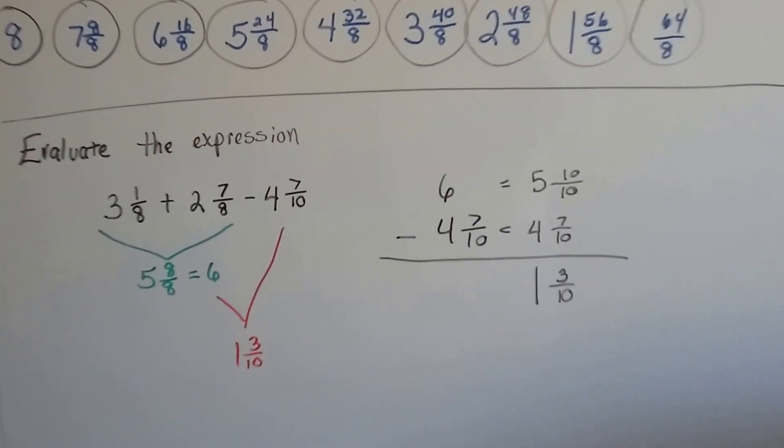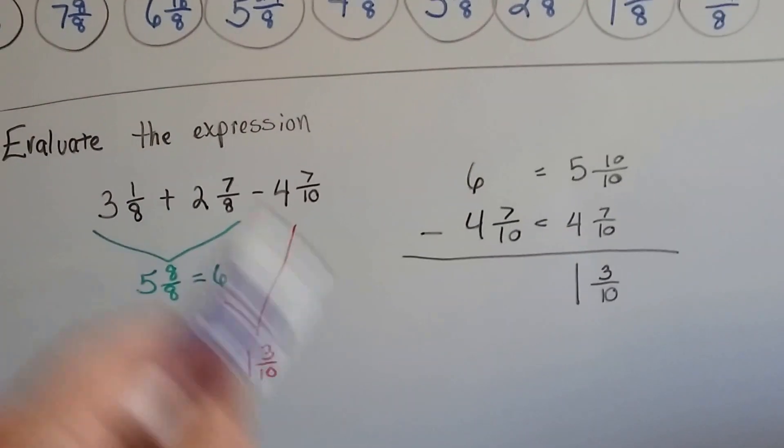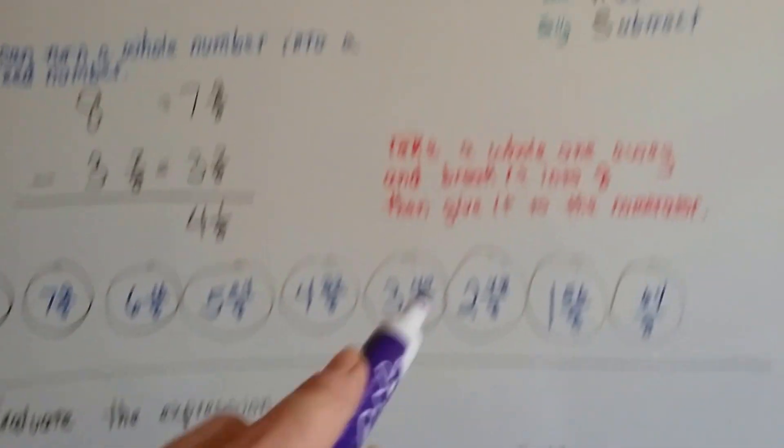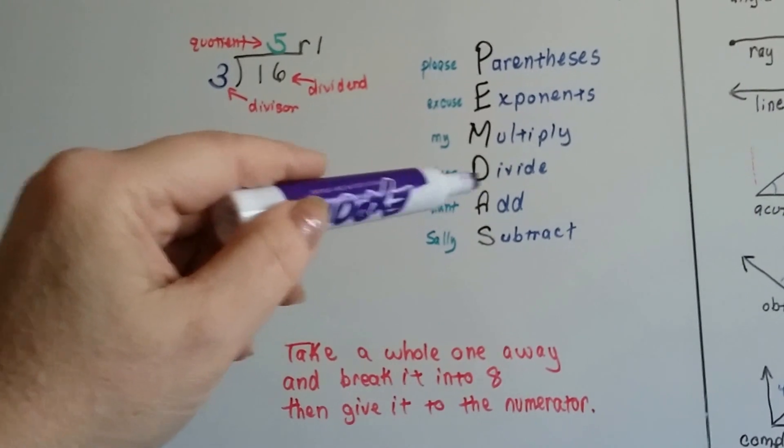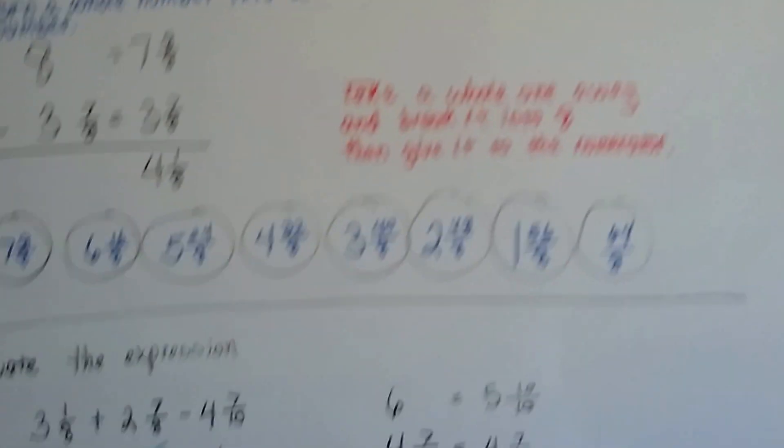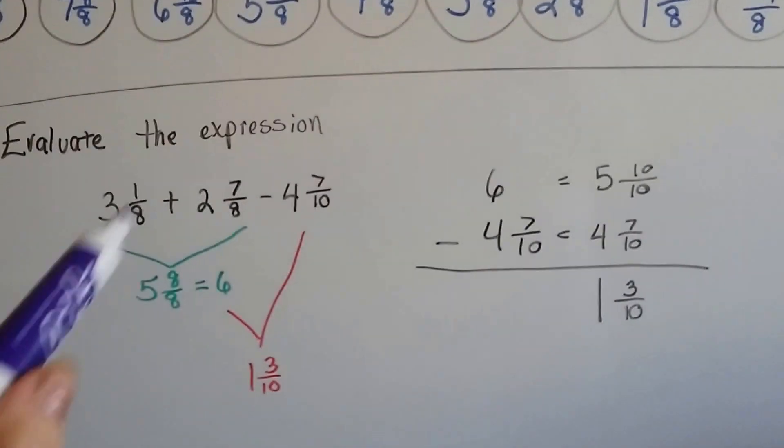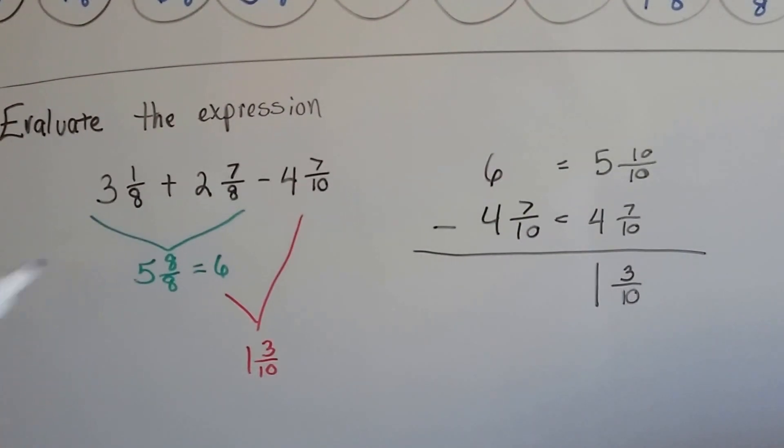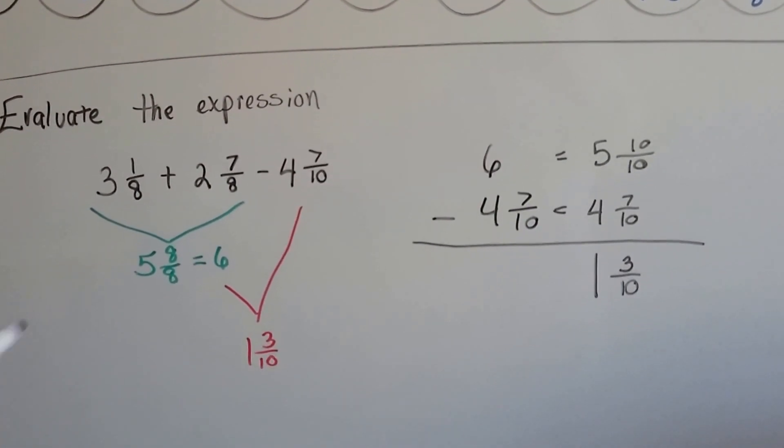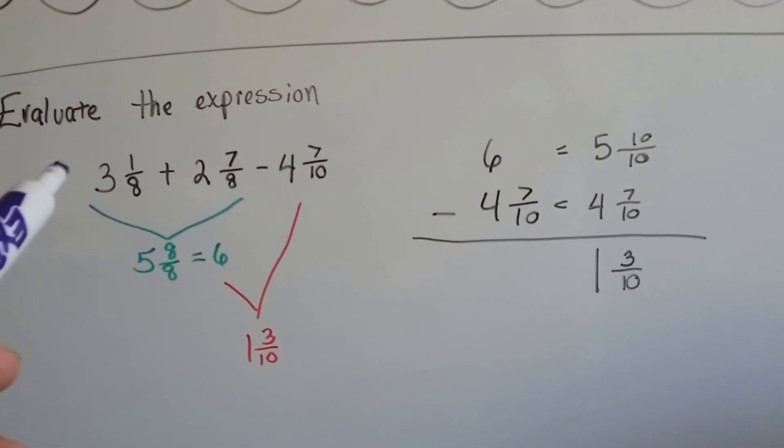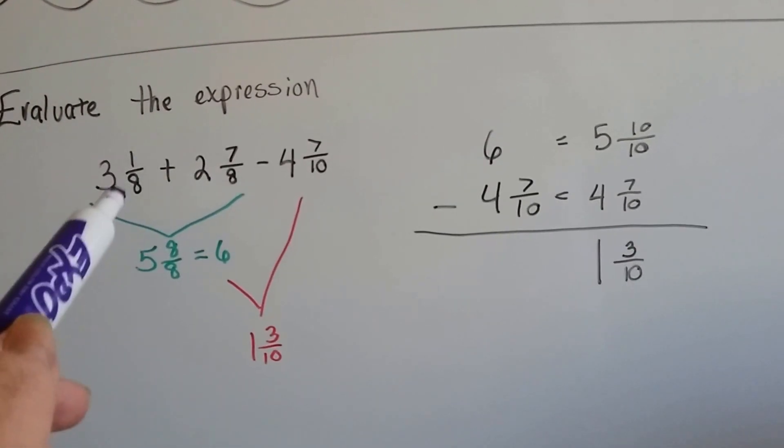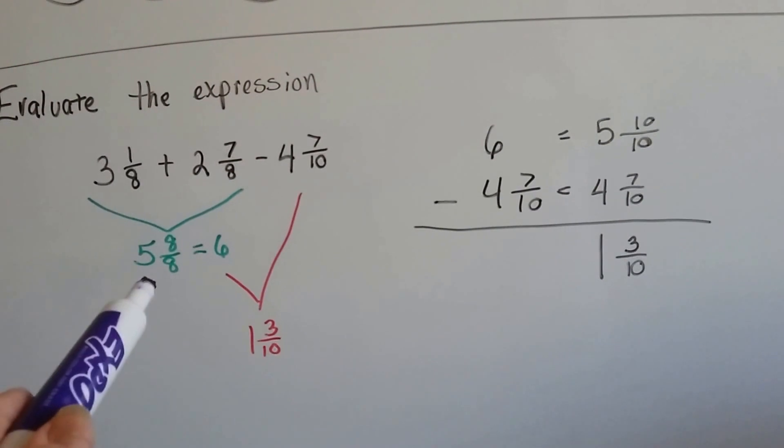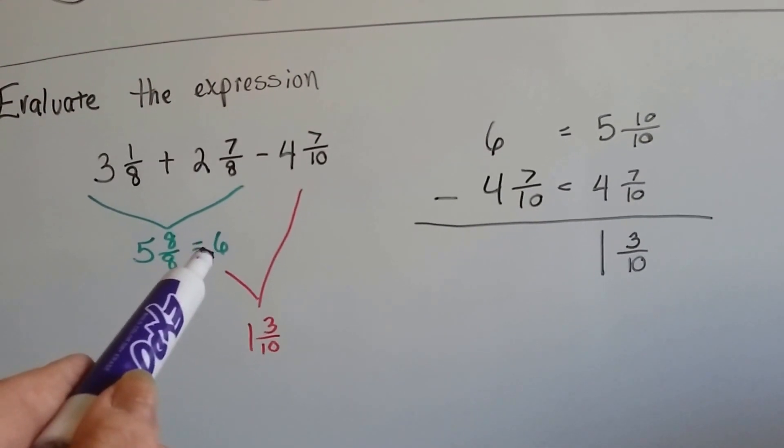If it says evaluate the expression and you don't see any parentheses, we know that the PEMDAS rules, the order of operations rules, tell us to add and then subtract. So if you don't see any parentheses, follow the order of operations anyway. We'll add these two together and we'll get 5, and then the 1 eighth and 7 eighths makes 8 eighths. It makes a 6.